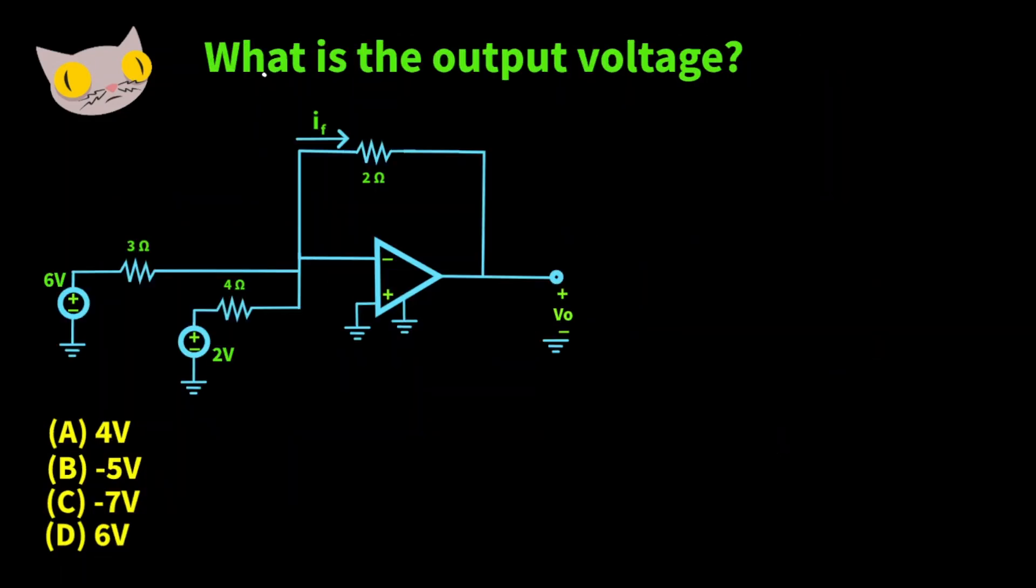For this next one we want to find the output voltage VO. We have everything we need. We have a 6 volt voltage source hooked to a 3 ohm resistor, a 2 volt voltage source hooked up to a 4 ohm resistor, and up here we have a 2 ohm resistor. So let's find our output voltage.